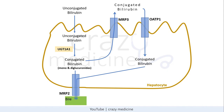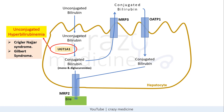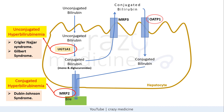Now let's see what happens in each syndrome. If there is a defect in the UGT1A1 enzyme, bilirubin will not be conjugated, resulting in unconjugated hyperbilirubinemia. Two syndromes with UGT1A1 deficiency are Crigler-Najjar syndrome and Gilbert syndrome. If there is a defect in the MRP2 channel, conjugated bilirubin cannot be excreted into bile, leading to conjugated hyperbilirubinemia — this is Dubin-Johnson syndrome. And if there is a defect in the OATP1 channel, there is conjugated bilirubinemia due to reduced reuptake of conjugated bilirubin from portal circulation — this is Rotor syndrome.